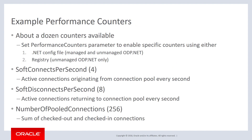There are about a dozen counters available in ODP.NET. To enable them, you set the performance counters parameter in your .NET config file or in your registry. This parameter decides which counters are enabled — you can choose whichever ones you want. The .NET config file is available for both managed and unmanaged ODP.NET, while the registry option is only available with unmanaged ODP.NET.